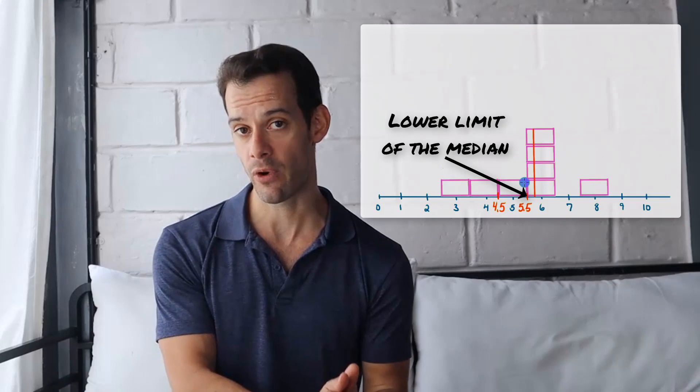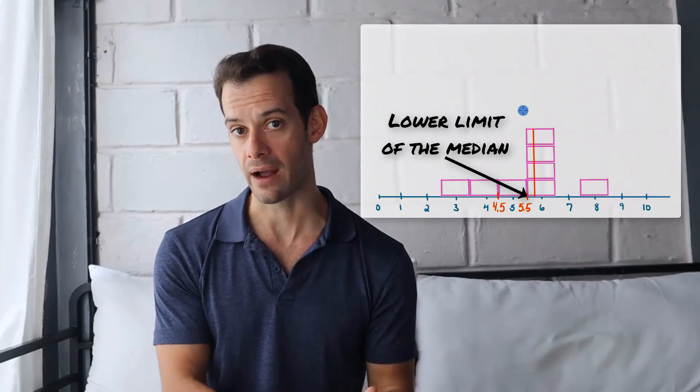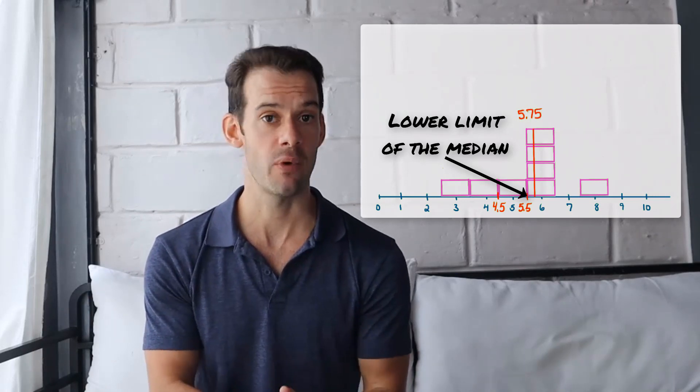And so from 5.5, the lower limit of our median, we move up 1 quarter of a box, 1 quarter of our class interval. And that's going to give us a precise median of 5.75.